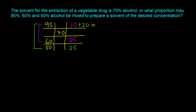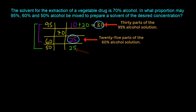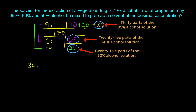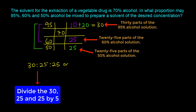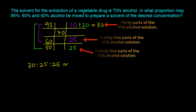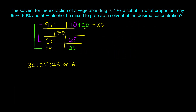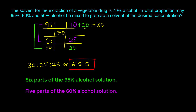So in total: 10 plus 20 equals 30 parts of the 95% alcohol, 25 parts of the 60% alcohol, and 25 parts of the 50% alcohol. Dividing all numbers by 5 gives a reduced proportion of 6:5:5. So the final proportion is 6 parts of the 95% alcohol, 5 parts of the 60% alcohol, and 5 parts of the 50% alcohol.